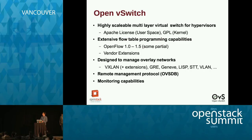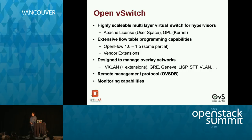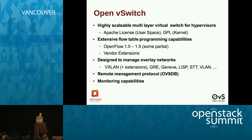OpenVSwitch is a virtual switch that works at multiple layers of the OSI model and has extensive programming capabilities. To program flow behavior, you can use the OpenFlow protocol — all versions are supported, along with a number of vendor extensions. The vendor extensions are one of the things we'll be talking about today to enable connection tracking. Probably the biggest use case for OVS is supporting tunnels to create overlay networks. In addition to OpenFlow, there is the OVSDB protocol for remotely managing aspects like creating bridges and tunnels, and OVS has extensive monitoring capabilities as well.